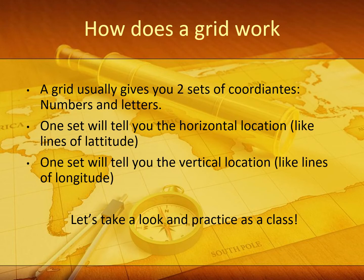So how does a grid work? A grid usually gives you two sets of coordinates — numbers and letters for the most part. One set will tell you the horizontal location, like lines of latitude, and one set will tell you the vertical location, which are like lines of longitude. You probably did this in math in third and fourth grade when you talked about a coordinate grid — you went over then up. This is a lot like that, so let's go ahead and practice as a group.